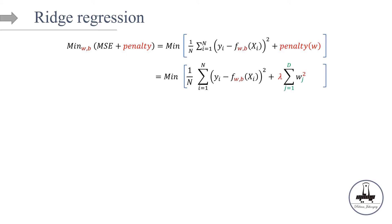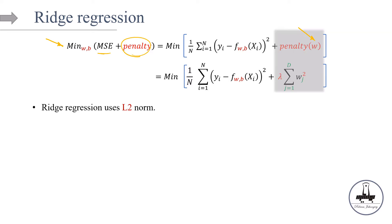So what is ridge regression? Here's the loss function: we're minimizing MSE plus some penalty term, and that penalty is a function of weights. Depending on how we define that functional form for the penalty term, we come up with different penalized regressions. In ridge regression, that functional form is the L2 norm — basically the summation of weights squared — and this is called ridge regression.